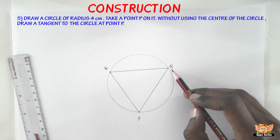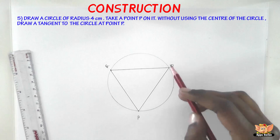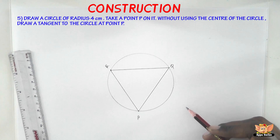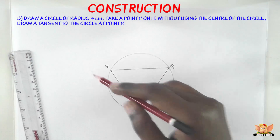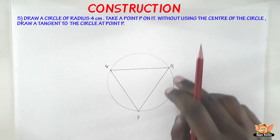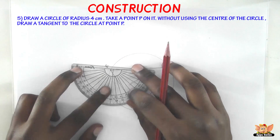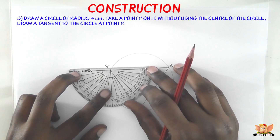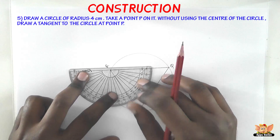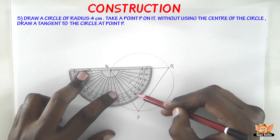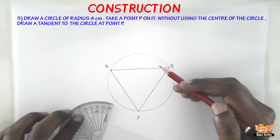Now what we have to do is construct an angle QPY such that it is equal to angle QRP. So we need to use a protractor and measure the angle QRP. Let's measure the angle QRP — it is 62 degrees.